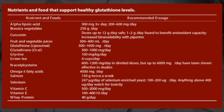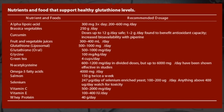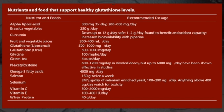Here is a list of foods and nutrients that increase glutathione levels in blood and cells, along with recommended dosages. For example: alpha-lipoic acid at 300 milligrams three times a day; curcumin, which is a brilliant antioxidant; glutathione itself in various forms; glycine; green tea; N-acetyl cysteine; omega-3 fatty acids; salmon; selenium; vitamin C; vitamin E; and whey protein.